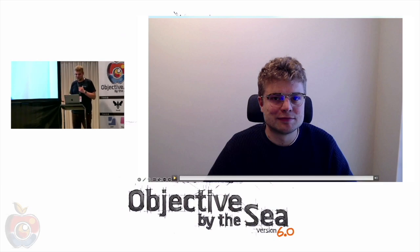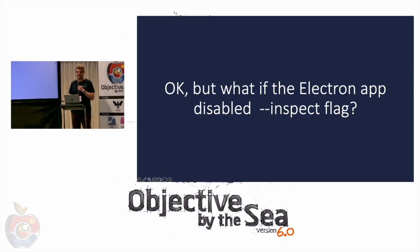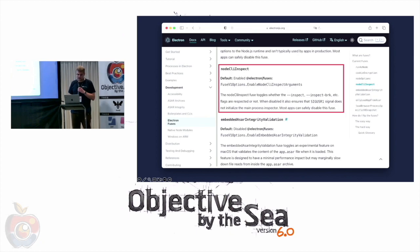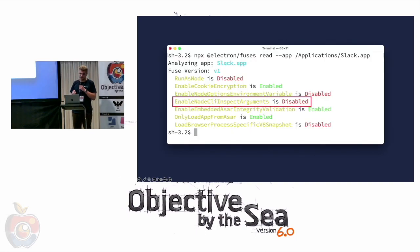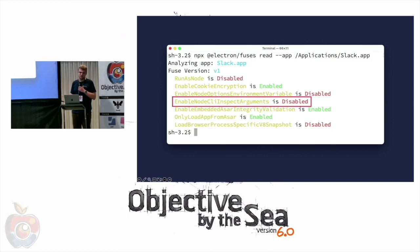But what if an Electron app has disabled the inspect flag? Electron introduced that feature about one and a half years ago as a pretty new feature. Microsoft applications, for example, still don't use it. There is something called Electron Fuses, which lets you disable the inspect argument. Using NPX, if you read the fuses on the Slack app, you'll see that 'enable node CLI inspect argument' for Slack is disabled — meaning we cannot use this tool against Slack.